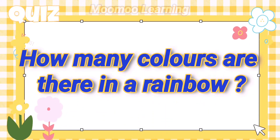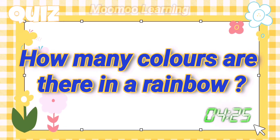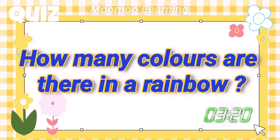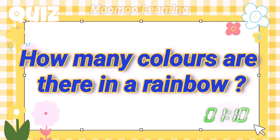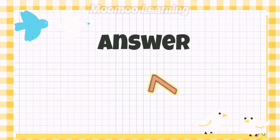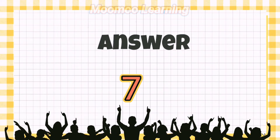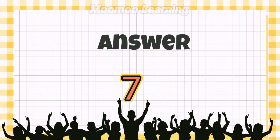How many colors are there in a rainbow? Answer: 7 colors.